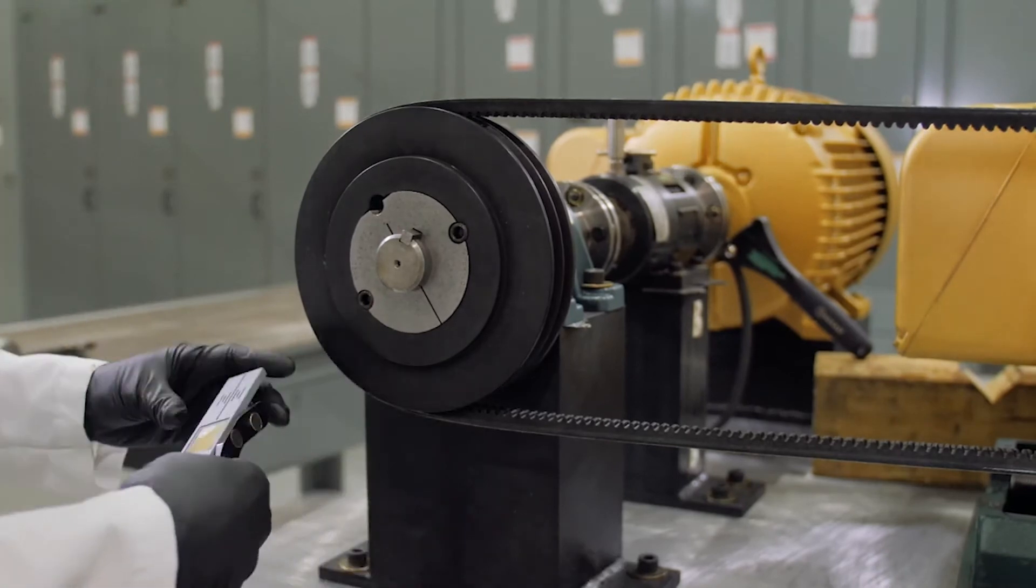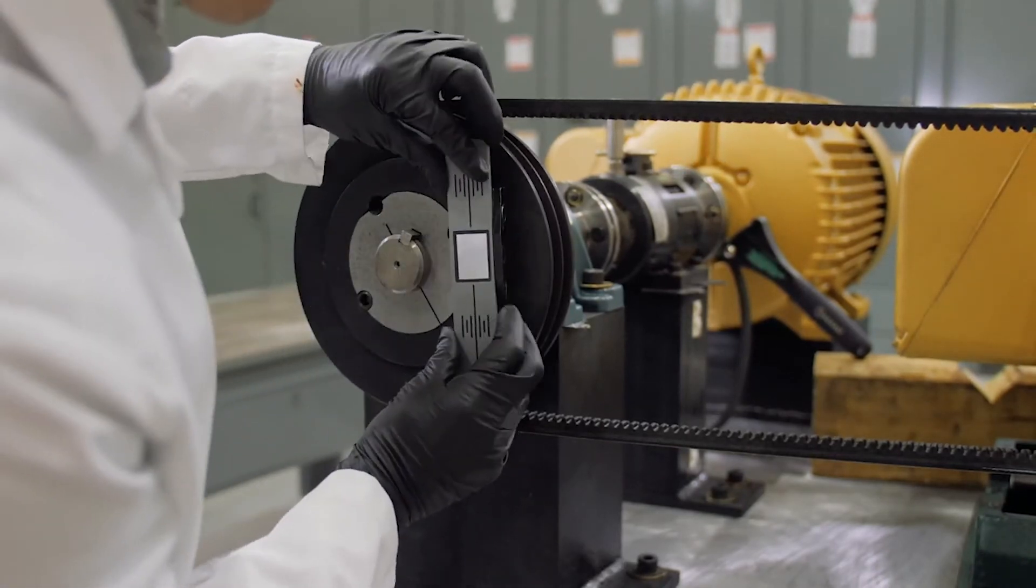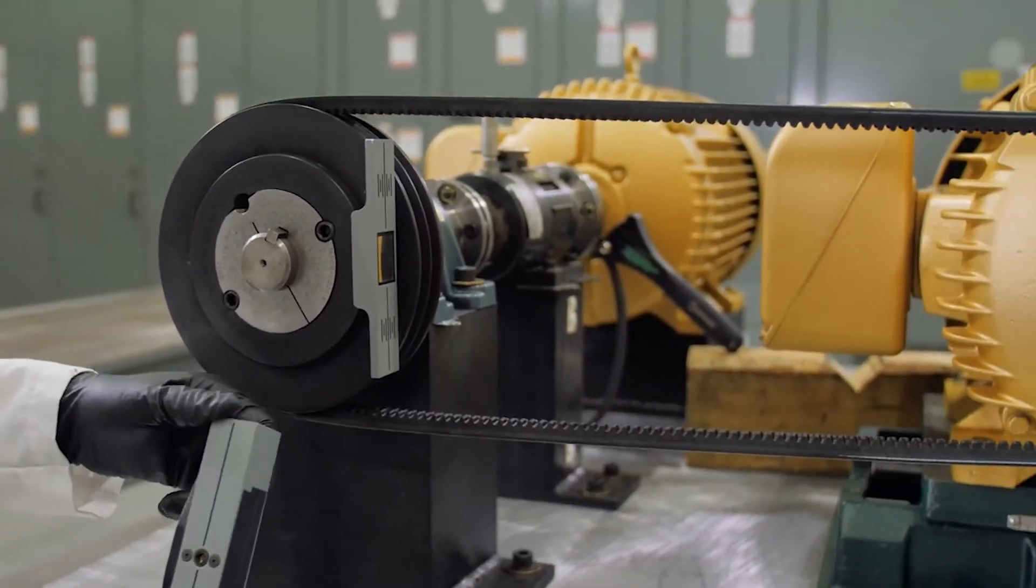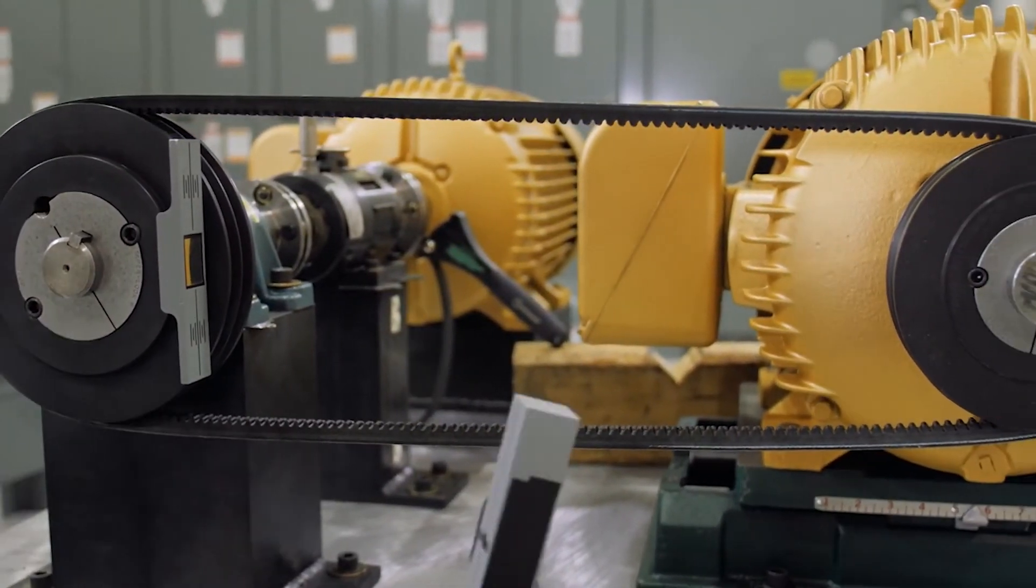Place a laser alignment device on the outside face of both the driver and driven shafts. Position both devices so that the device emitting the laser is pointing towards the reflective mirror.